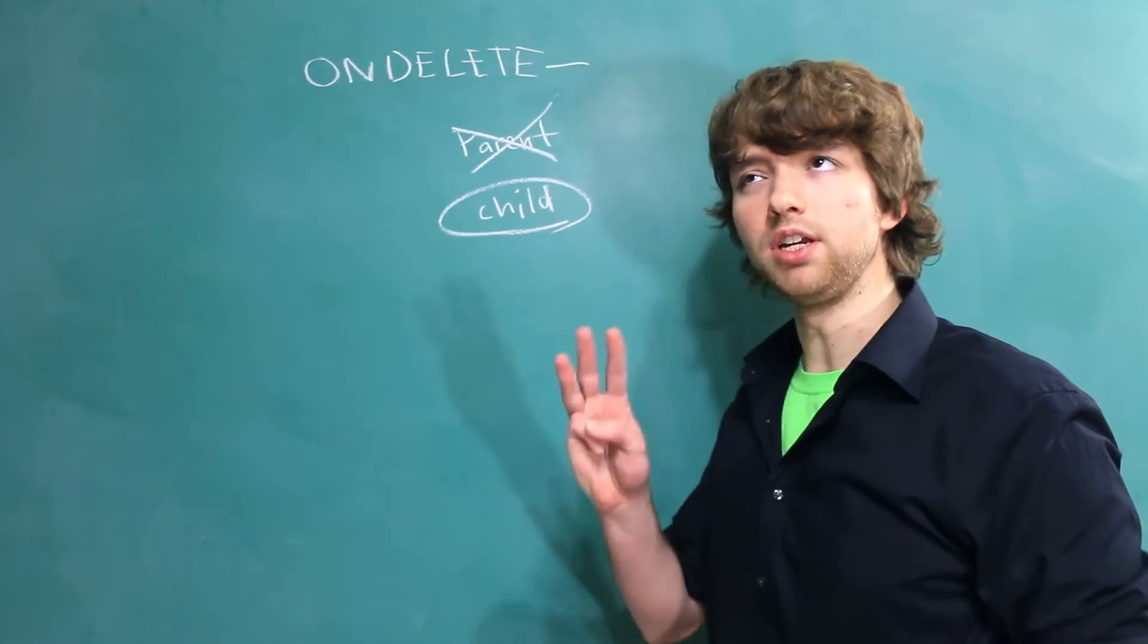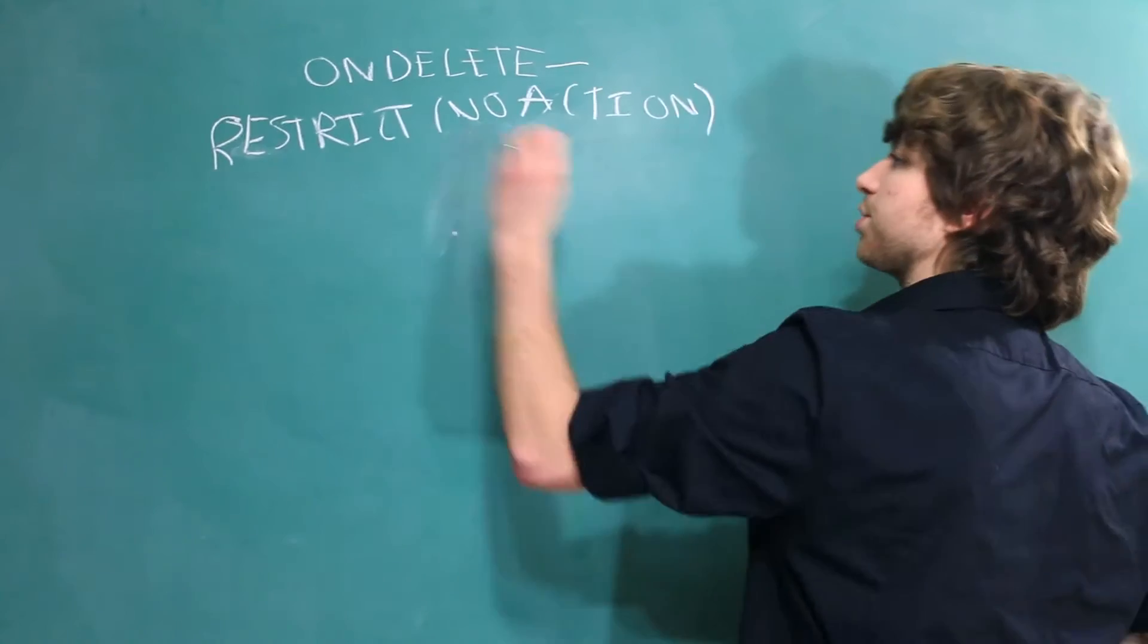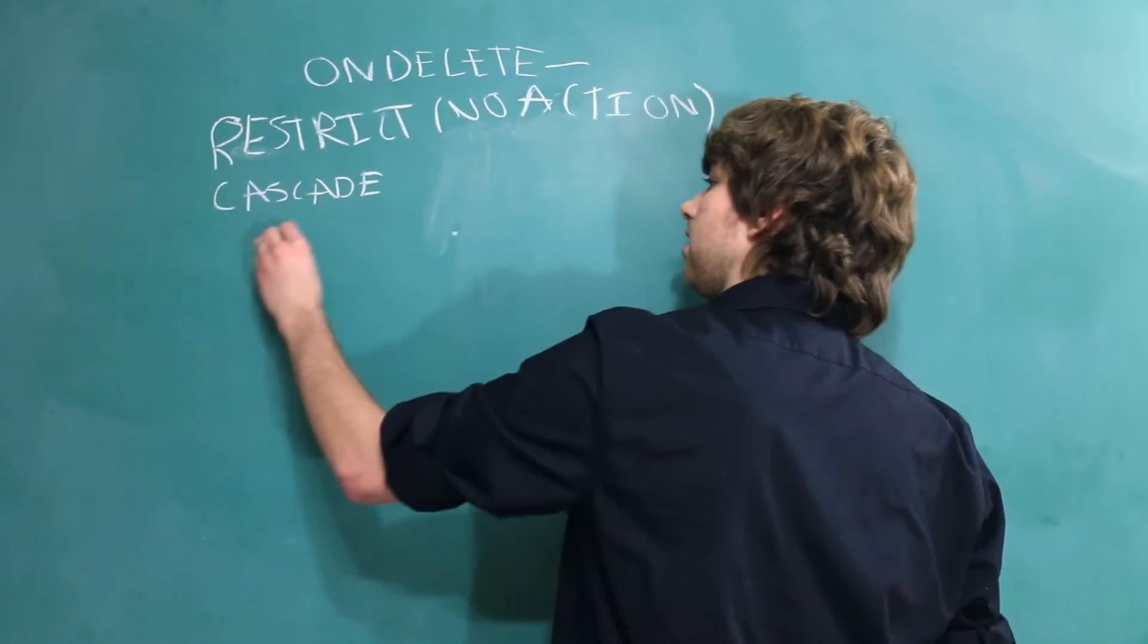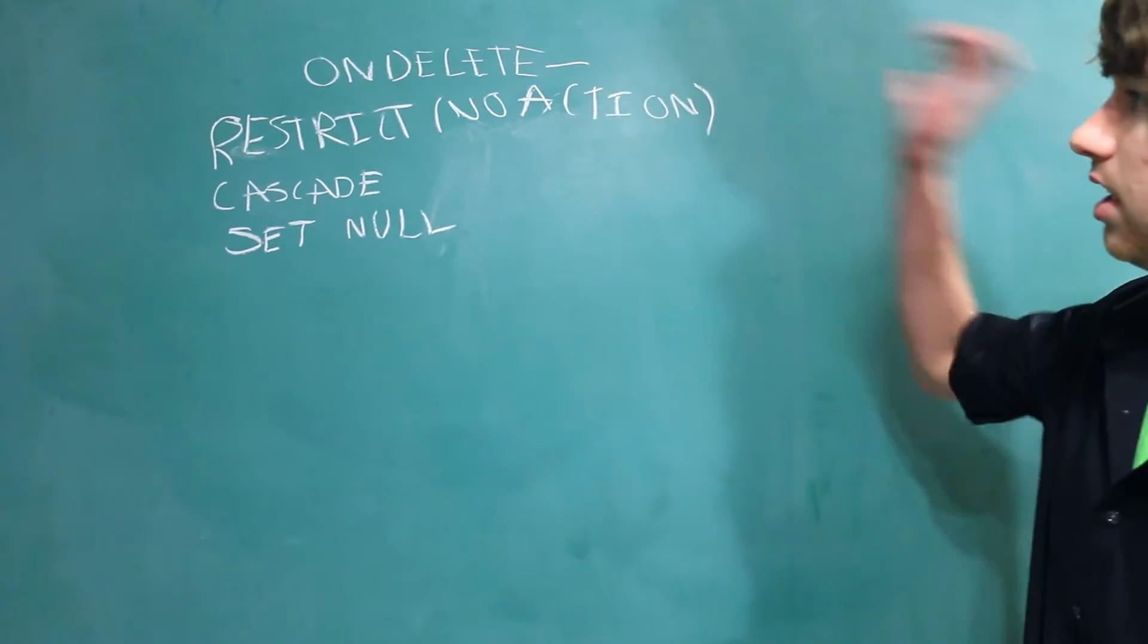Well, there's actually three, kind of four options with MySQL, and the options are Restrict, Cascade, and SetNull. And we are going to be discussing each one of these.